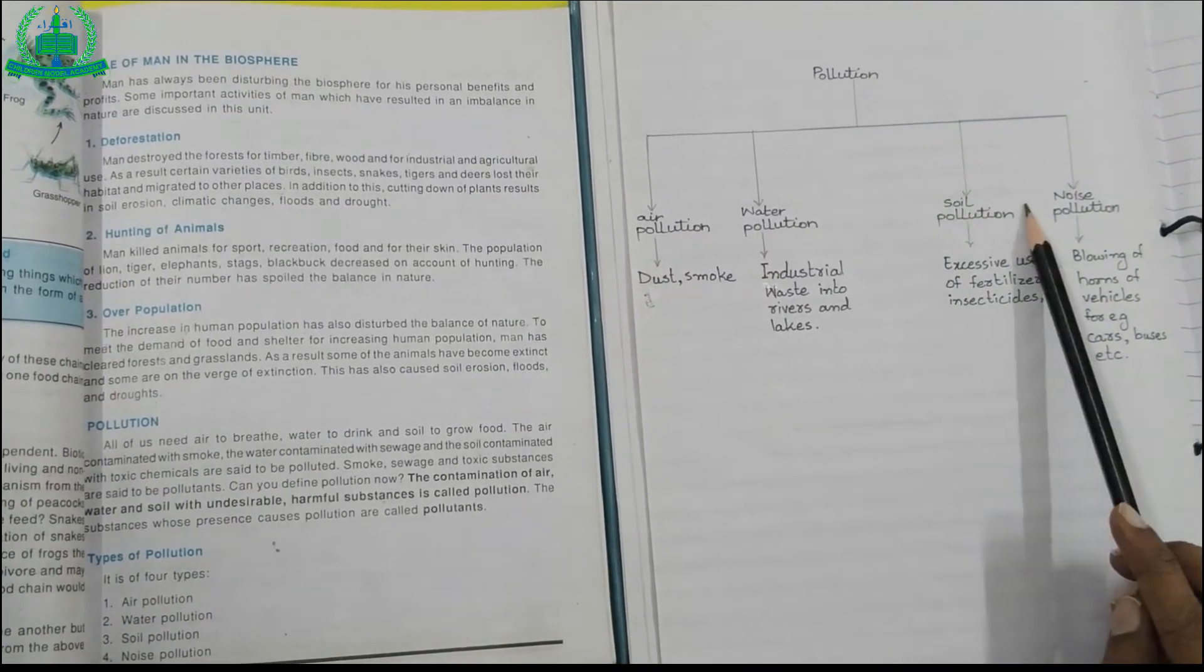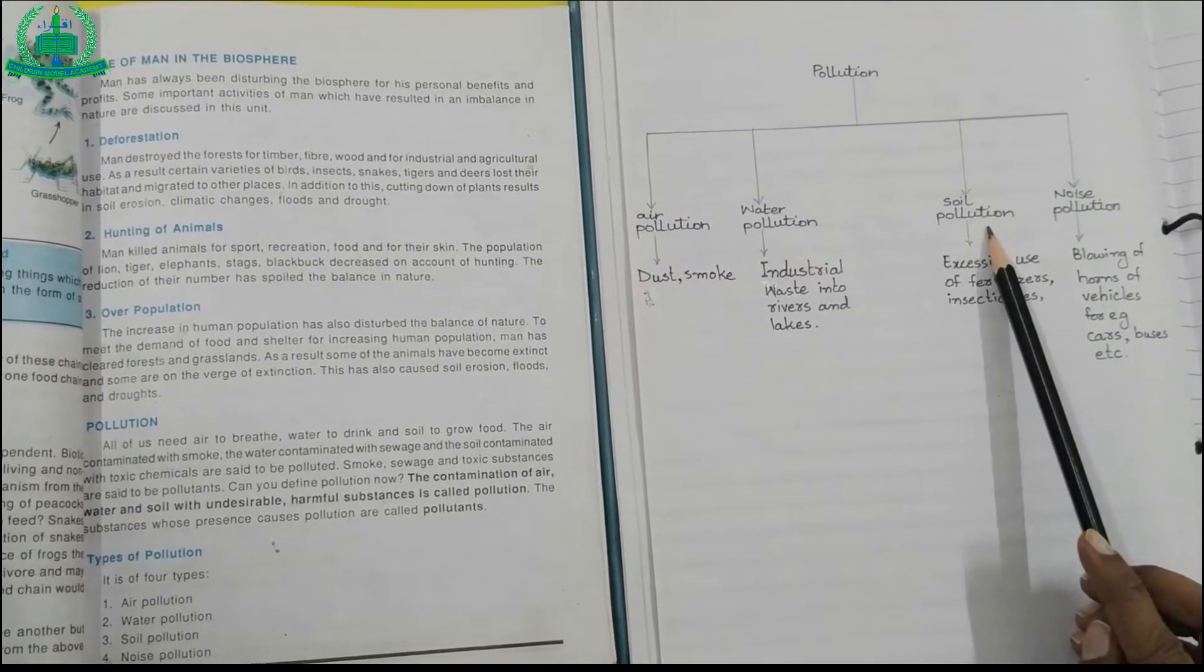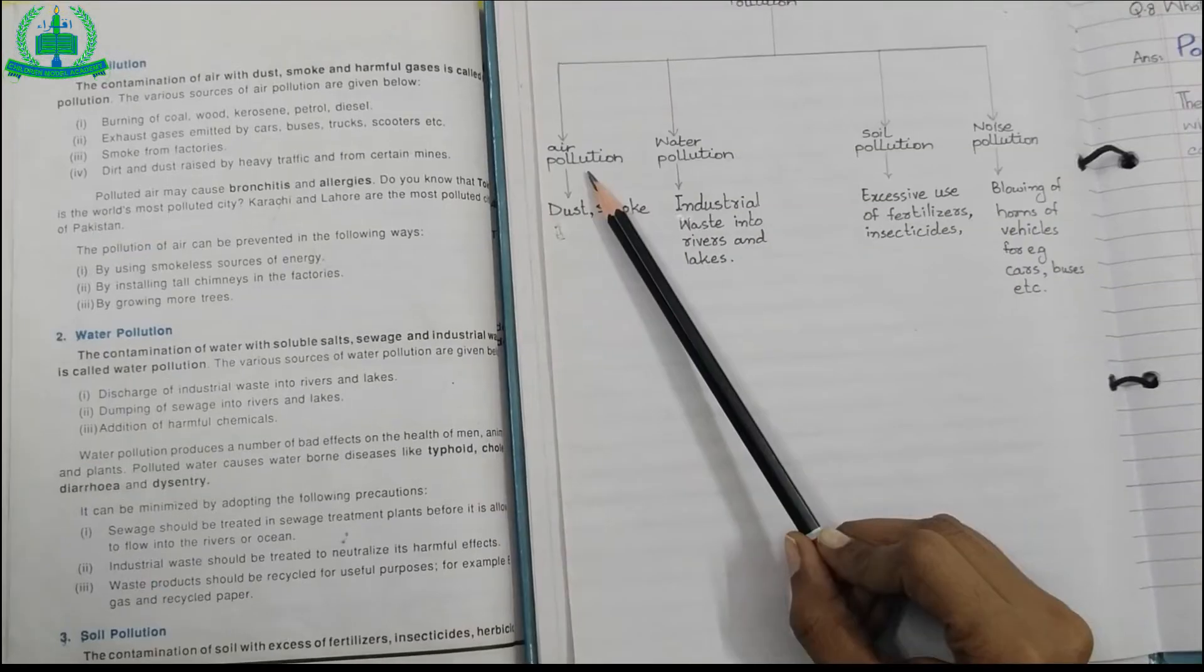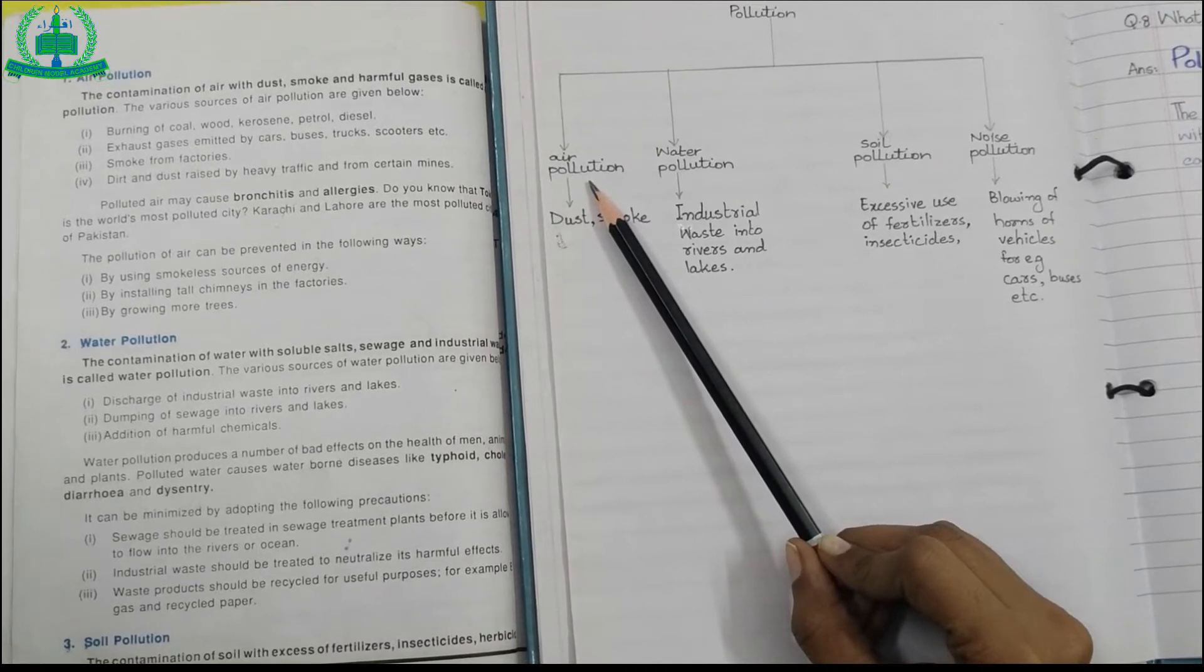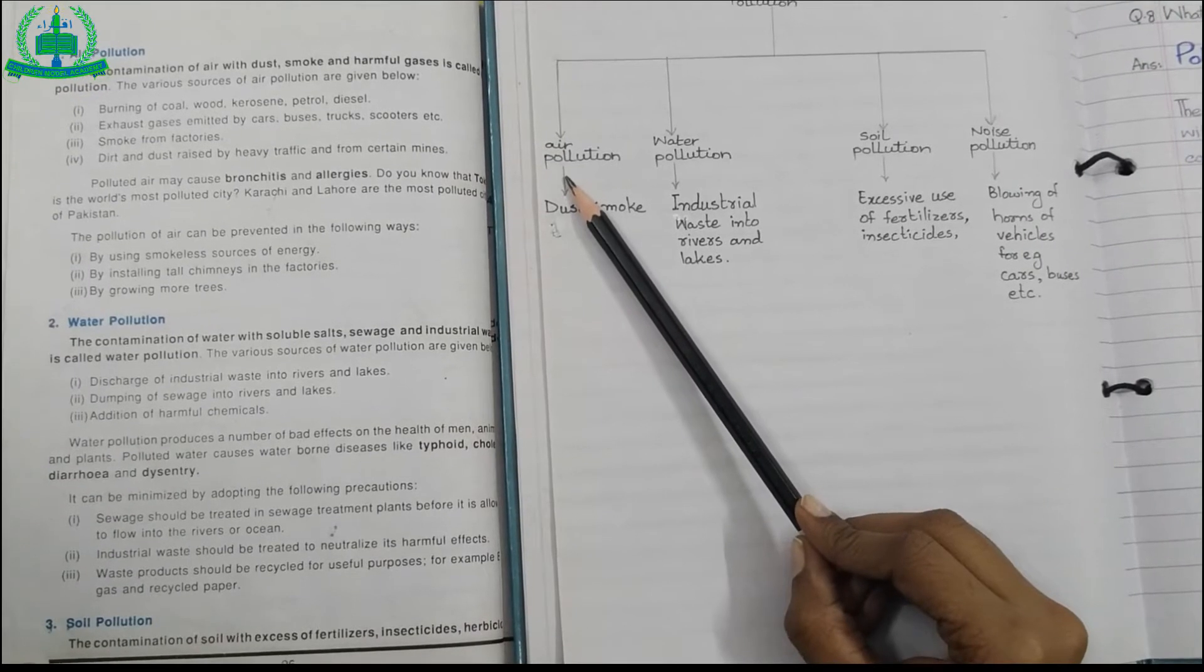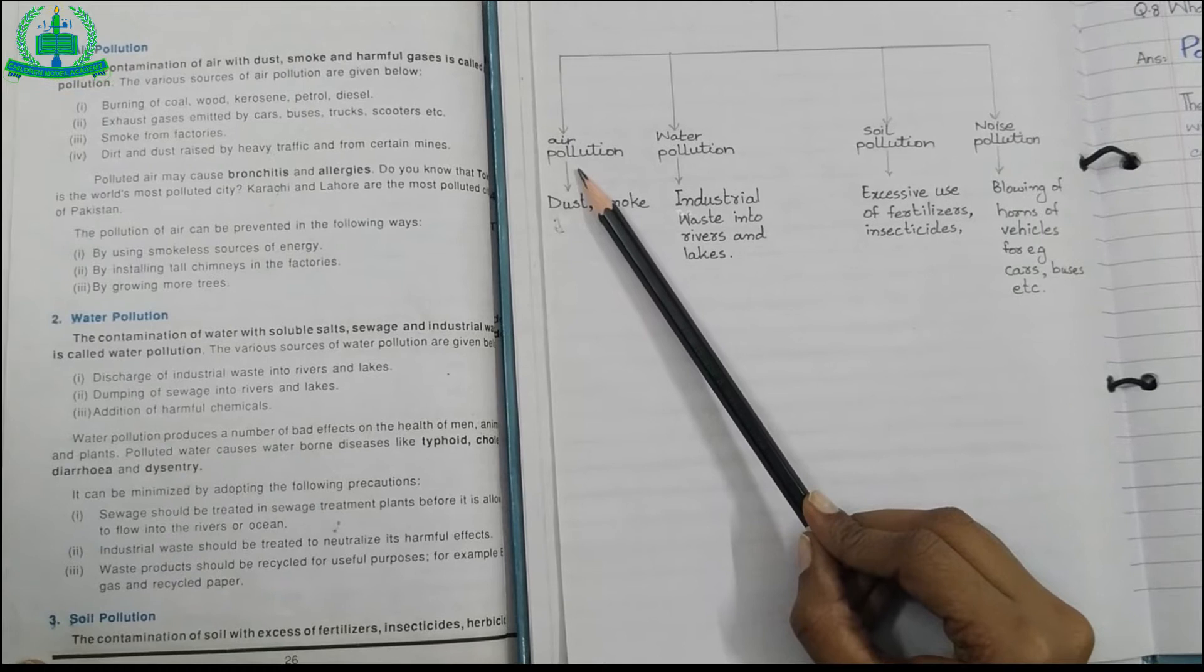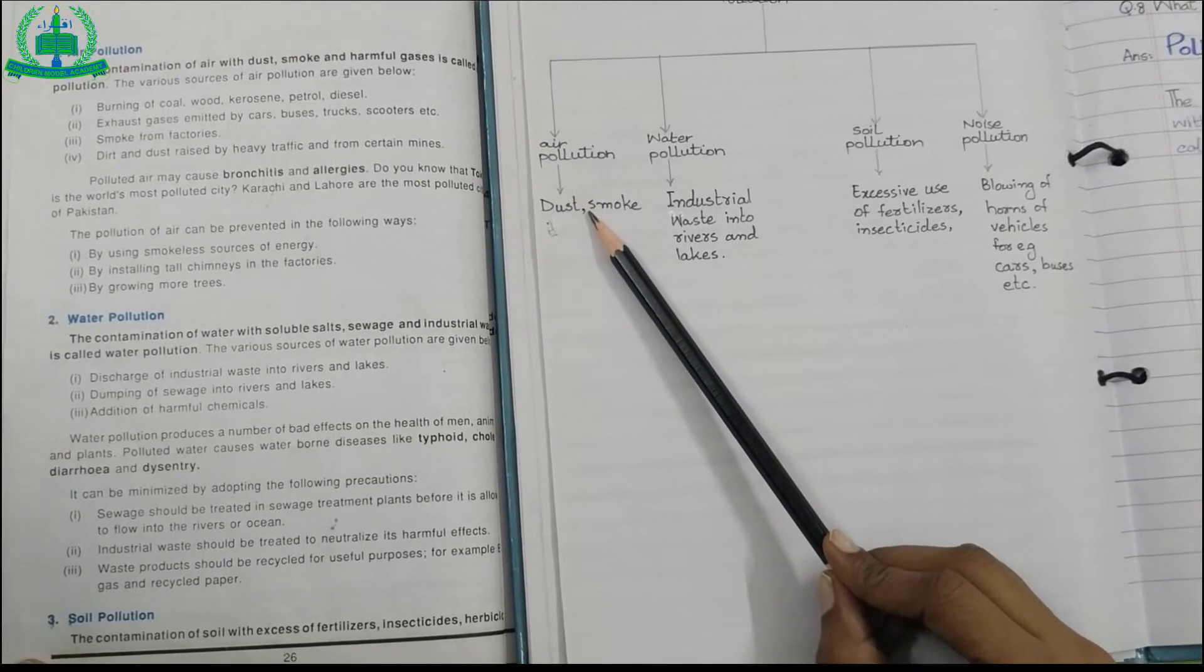There are four types of pollution: air pollution, water pollution, soil pollution, and noise pollution. Air pollution is the contamination of air with dust, smoke, and harmful gases. For example, burning of coal.